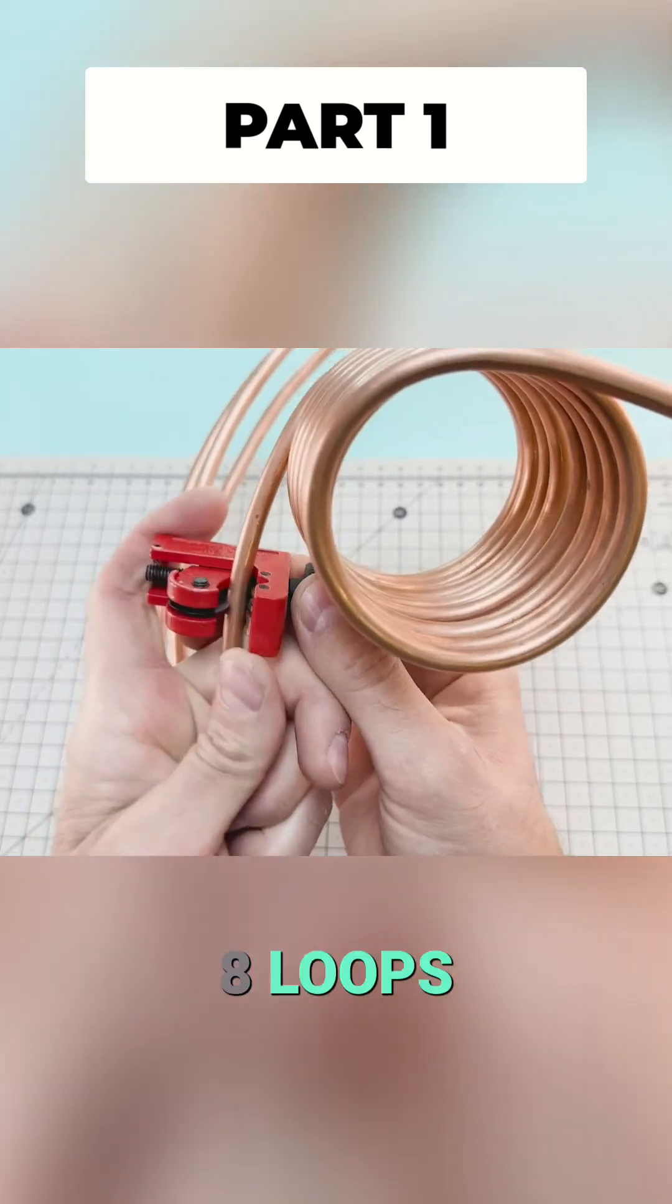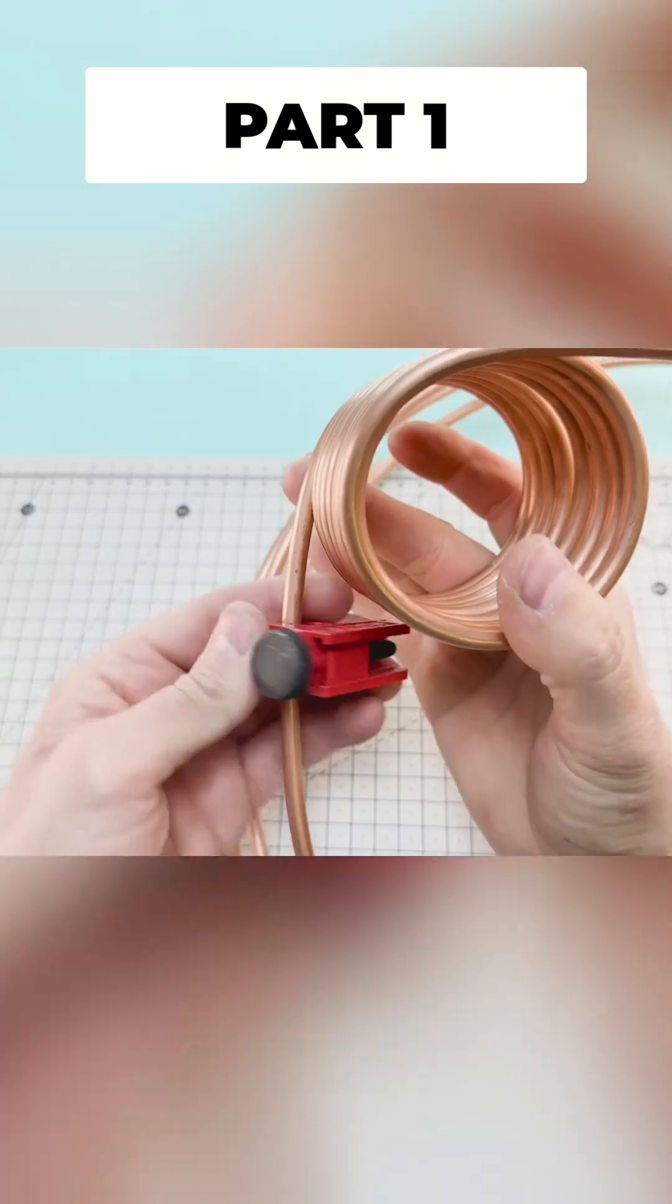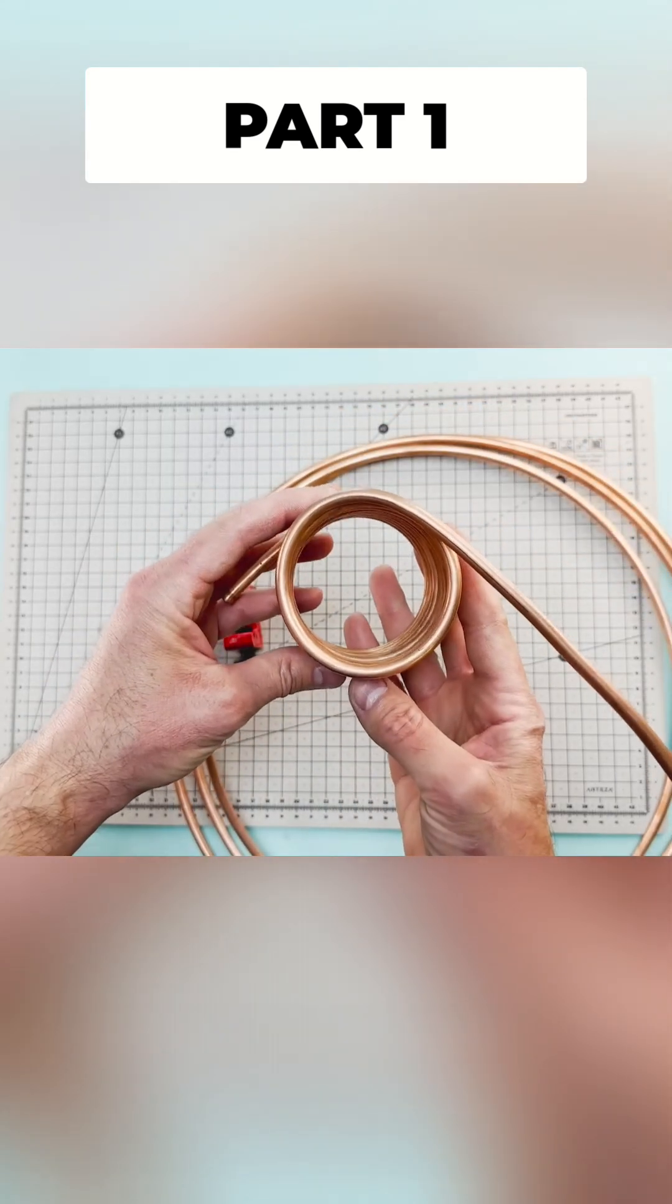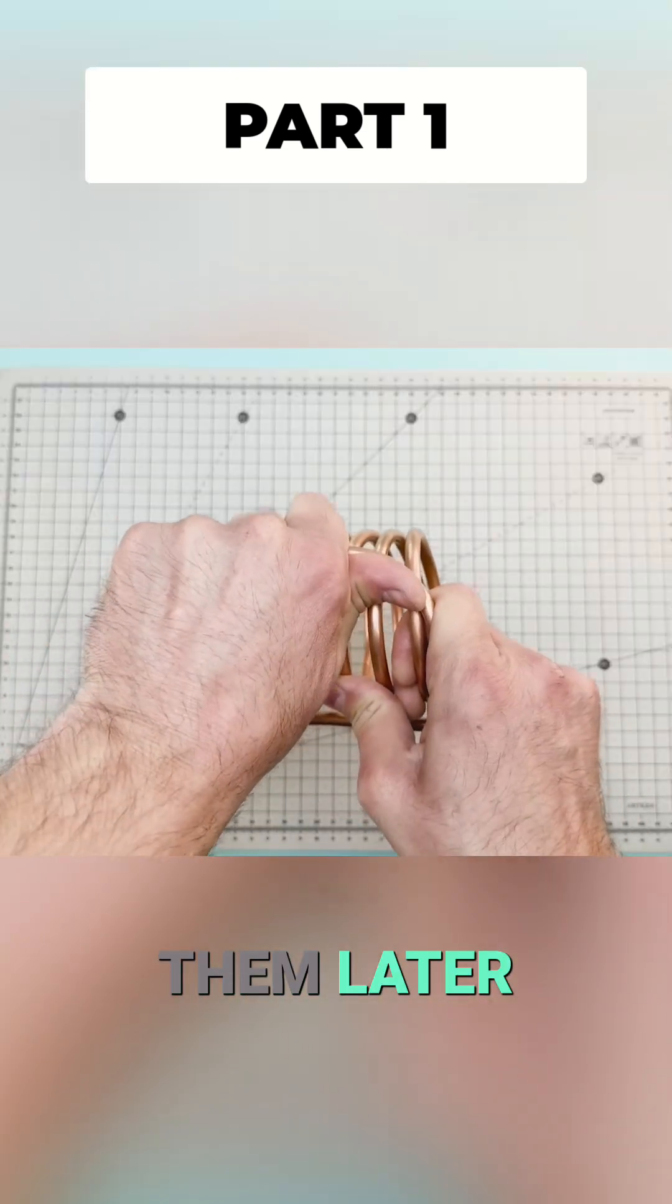Once we have about eight loops we proceed to cut the tube and slightly bend the ends so we can connect them later on.